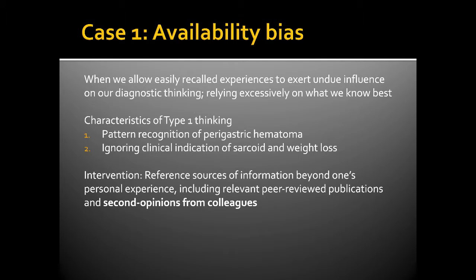This is an example of availability bias — when we allow easily recalled experiences to exert undue influence on our diagnostic thinking, relying excessively on what we know best. The Type 1 thinking characteristics include pattern recognition of perigastric hematoma (which was incorrect) and ignoring the clinical indication of sarcoid and weight loss. The intervention is to reference sources beyond personal experience, including peer-reviewed publications, and seek second opinions. Notably, when shown to another radiologist, he immediately said it looked like lymphoma — because he had a similar case just the prior week.